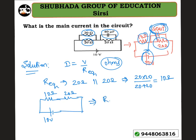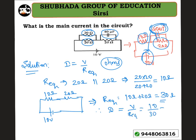Therefore, R_equivalent = 10 + 20 = 30 ohm. We can now calculate the current: I = V / R_equivalent = 10 / 30 = 0.33 ampere. So 0.33 ampere is the main current flowing through the circuit.